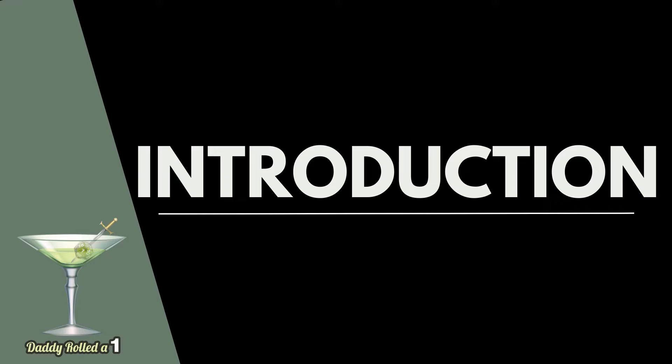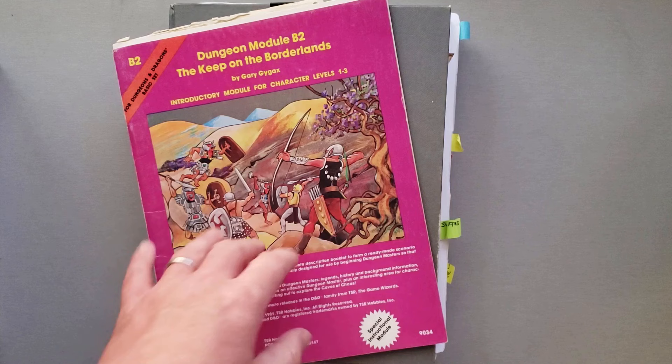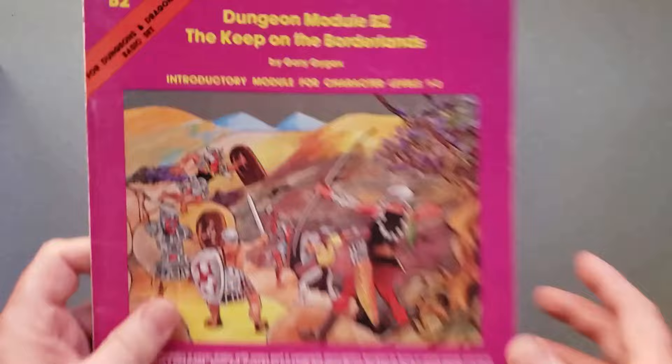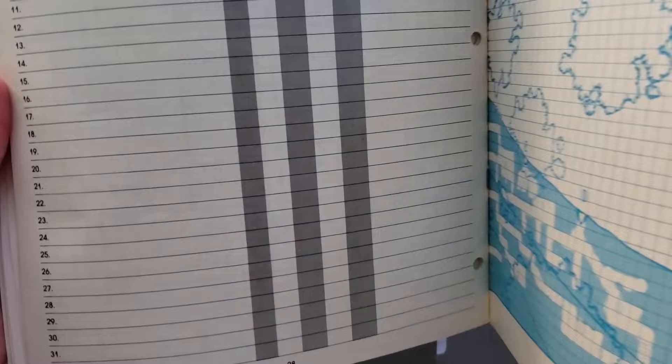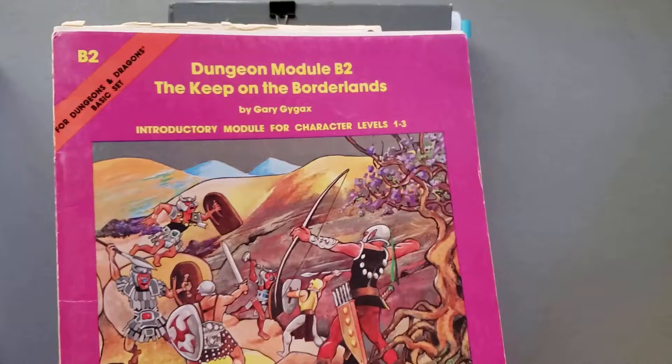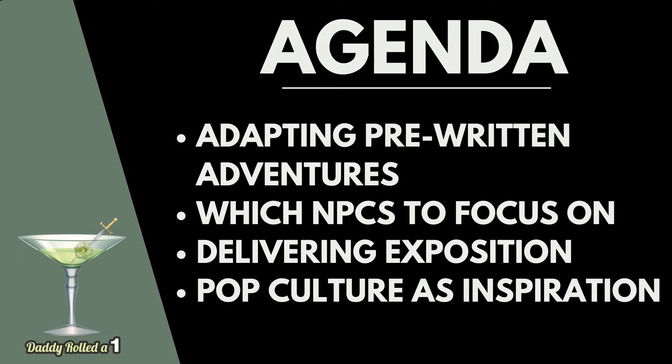This is part of my campaign prep series, but I'm going to be discussing how you can adapt, change, and just overall be flexible with a pre-written adventure — whether it's something as small and simple as this 28-page adventure from 1980 that I used for my daughter's campaign, or whether you're using an adventure path or one of those big hardback adventure books that cover levels 1 through 20, like from Pathfinder or 5e.